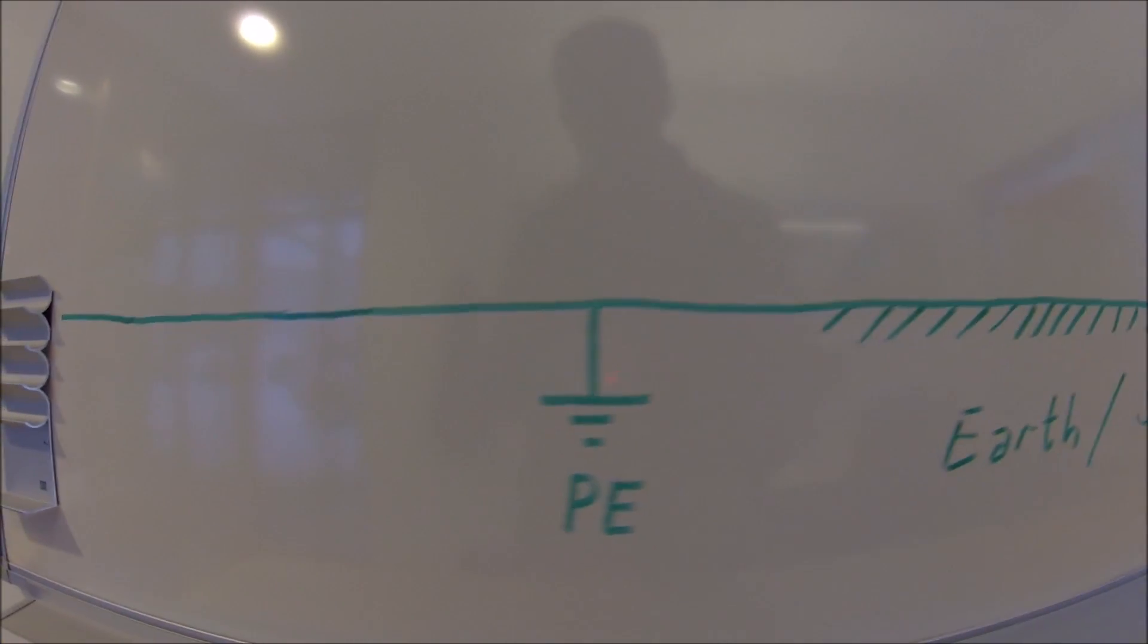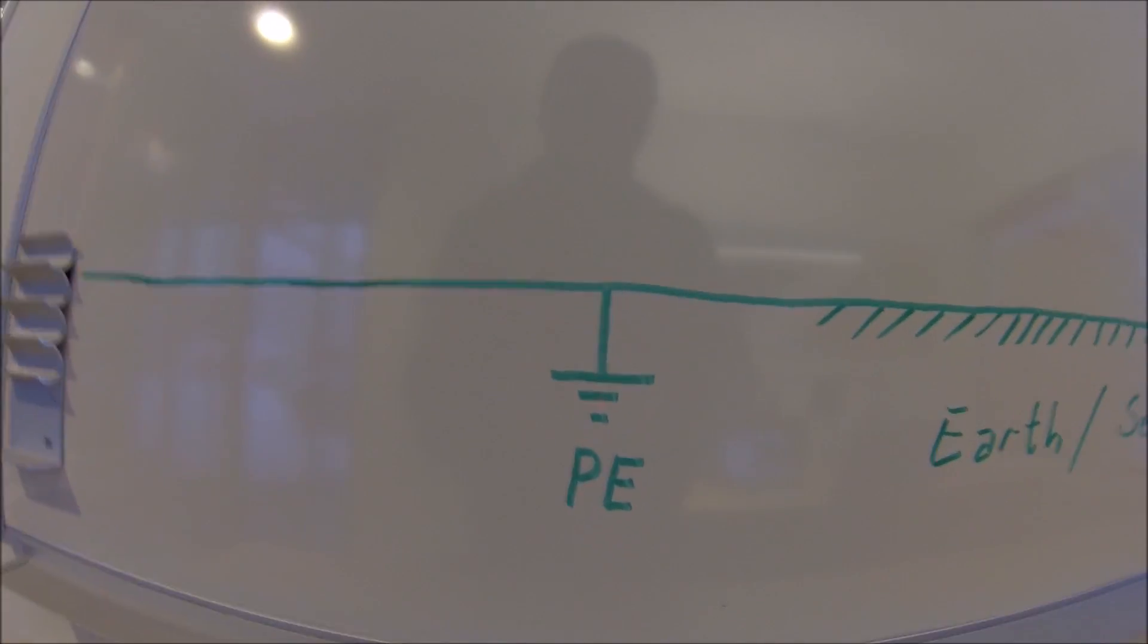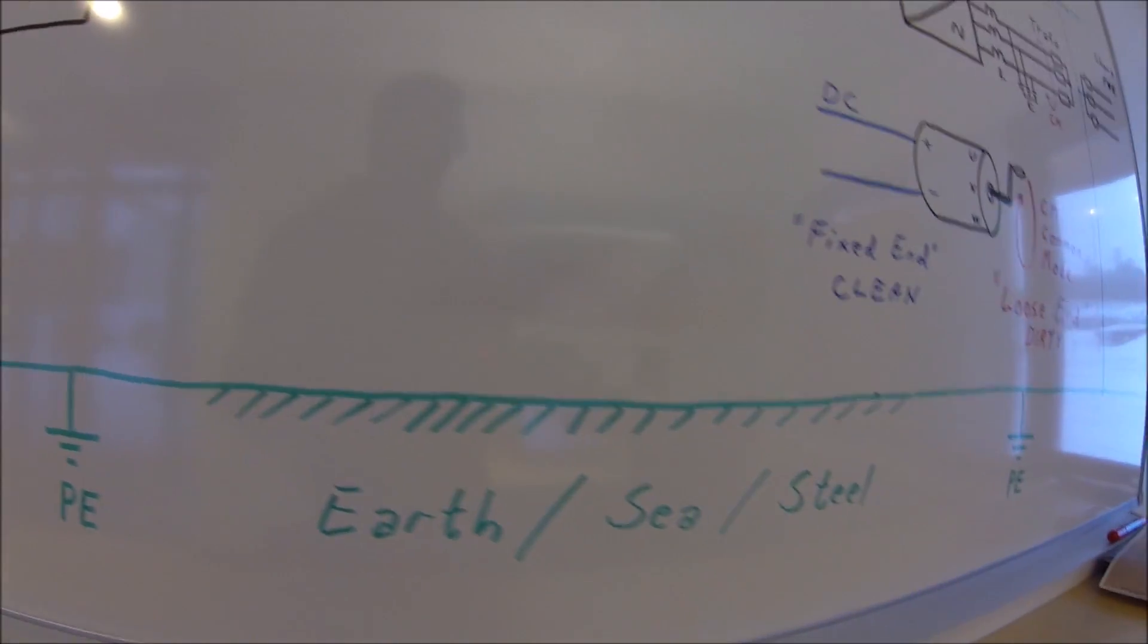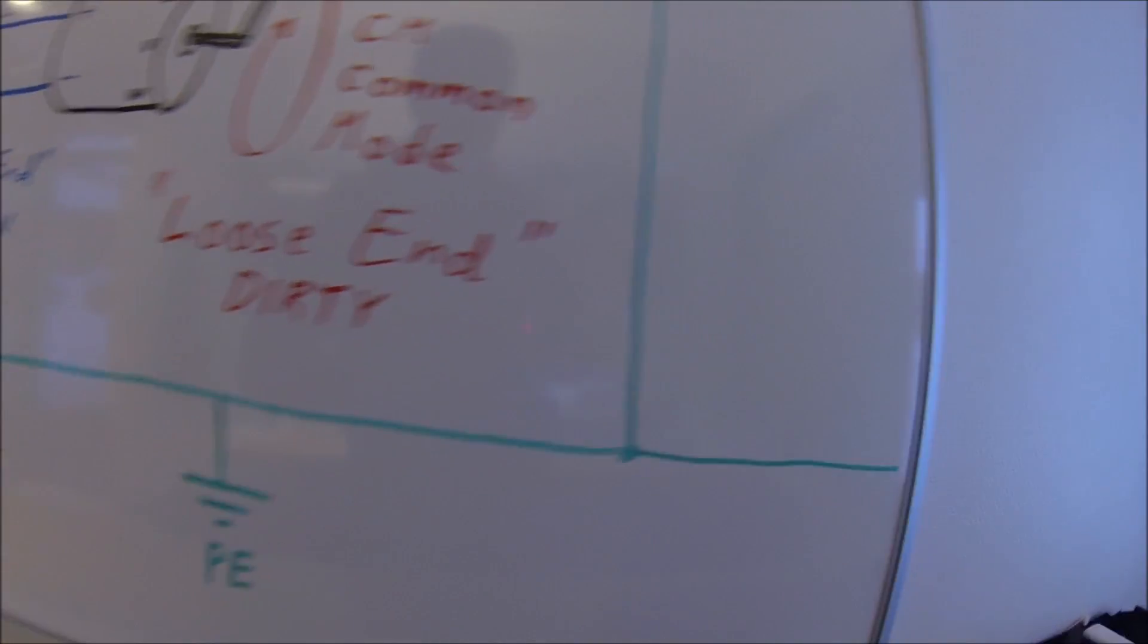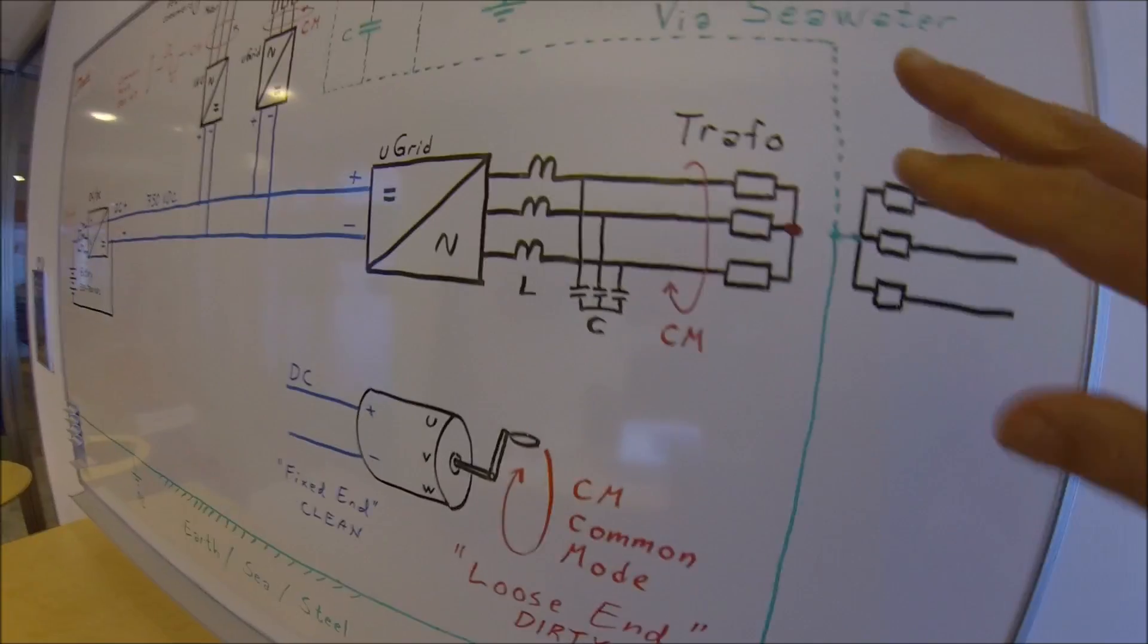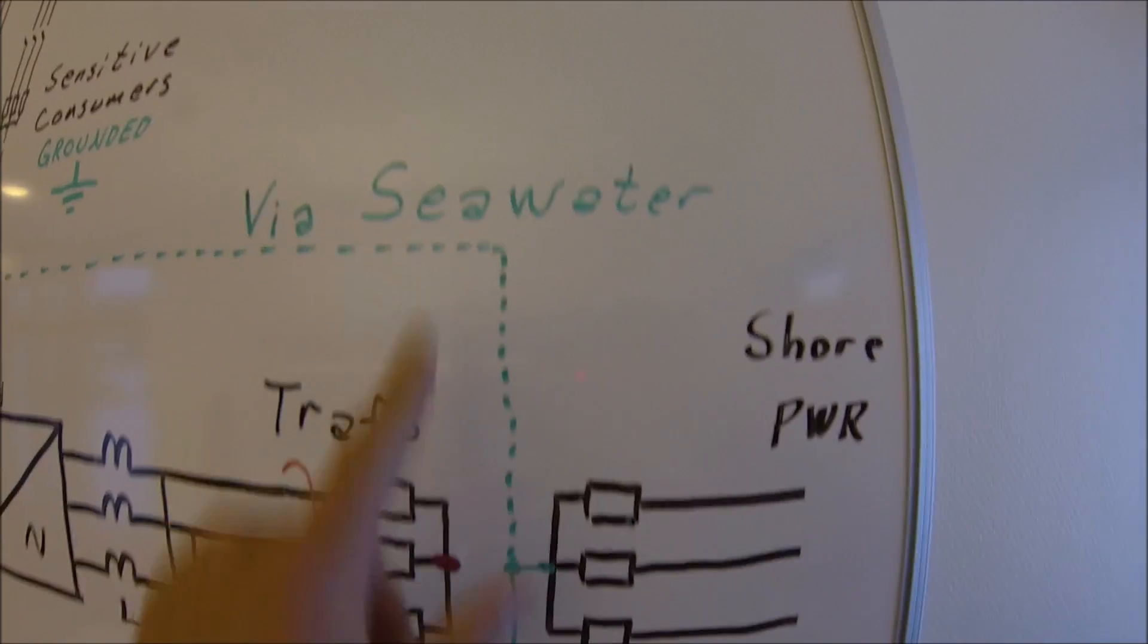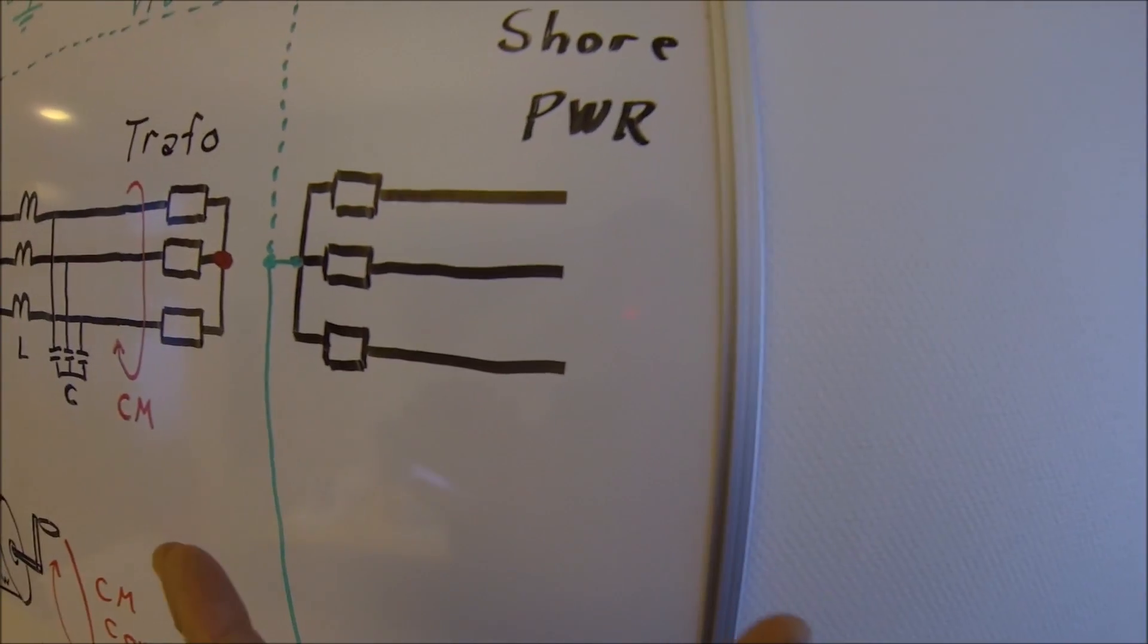The earth on board in a ship is so-called floating earth. But there will always be a capacitive coupling to all the consumers and also the steel will via the seawater connect it to shore.